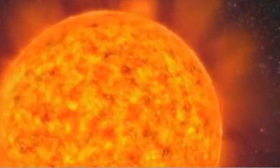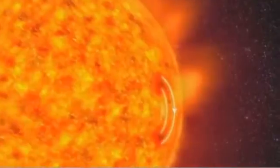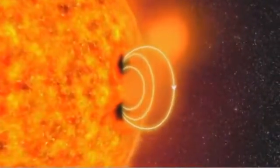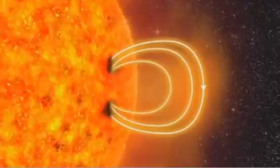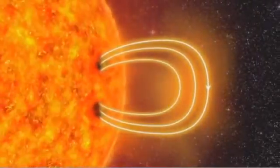In some places, strong magnetic fields push their way up through the surface. They slow down the eddies of hot gas. The surface cools, and darker sunspots appear.